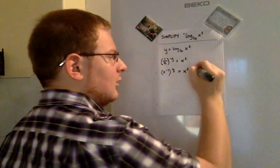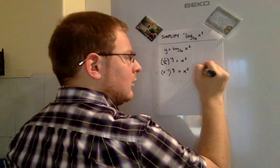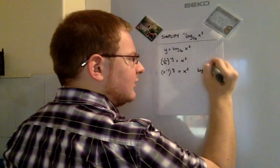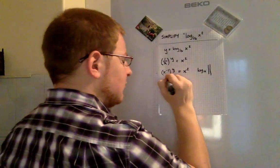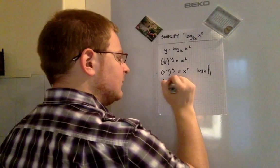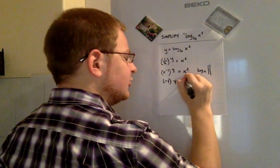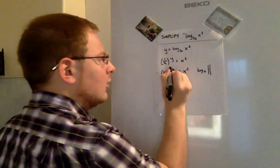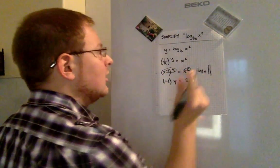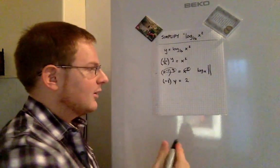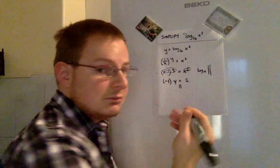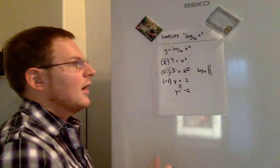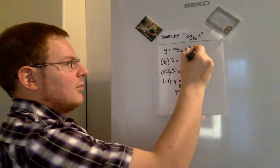We can now take the logarithm to the base x of both sides and get minus 1 times y is equal to 2. We're basically looking only at the exponential parts of the left and right-hand side, so that of course leads us to the knowledge that y is equal to negative 2. And lo and behold.